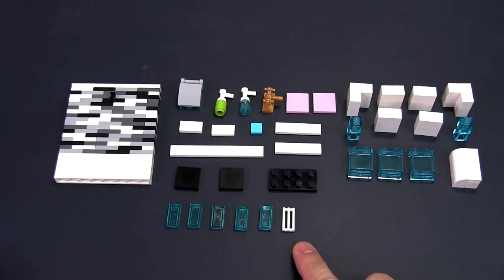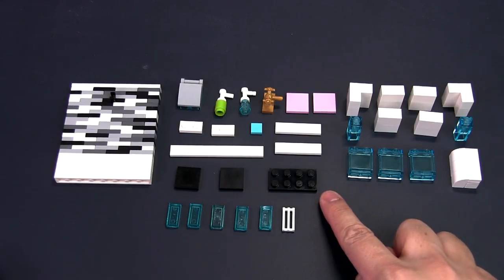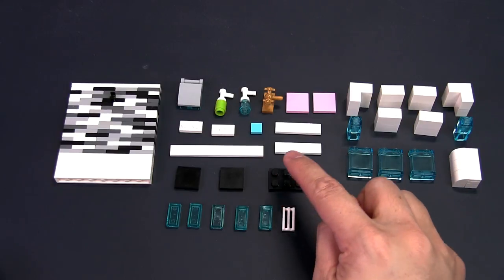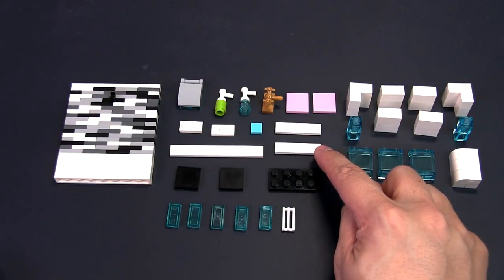A 1x2 grill piece, five 1x2 trans-blue tiles, a 2x4 black plate, two 2x2 black tiles, a 1x8 white tiles.